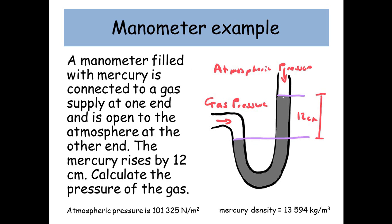So here's an example. A manometer filled with mercury is connected to a gas supply at one end and is open to the atmosphere at the other end. The mercury rises by 12 centimeters. Calculate the pressure in the gas.